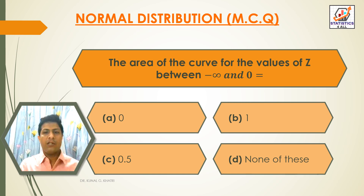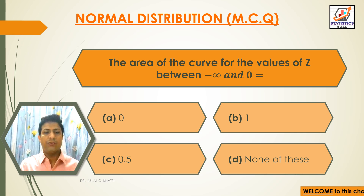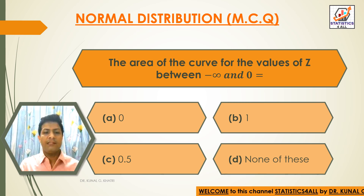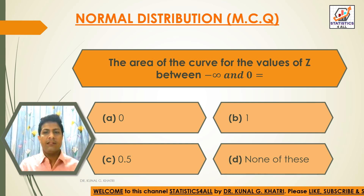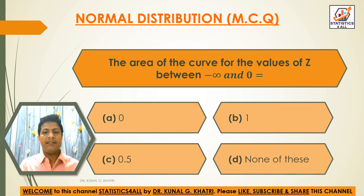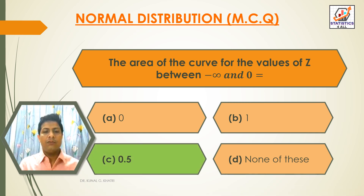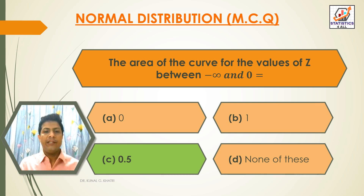Next question: the area of the curve for the values of Z between minus infinity and 0 is equal to — Option A: 0. Option B: 1. Option C: 0.5. Option D: none of these. The answer is Option C — 0.5. The area between minus infinity and 0 is equal to 0.5.